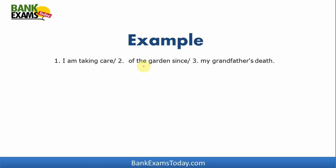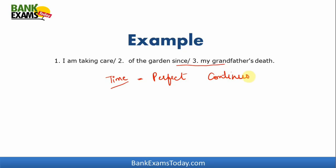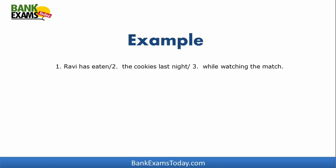Then: "I am taking care of the garden since my grandfather's death." Here we have a time reference — 'since my grandfather's death.' When a definite or indefinite time is given in a sentence, we use the perfect continuous tense. Since the context is present, it should be present perfect continuous: "I have been taking care of the garden since my grandfather's death."